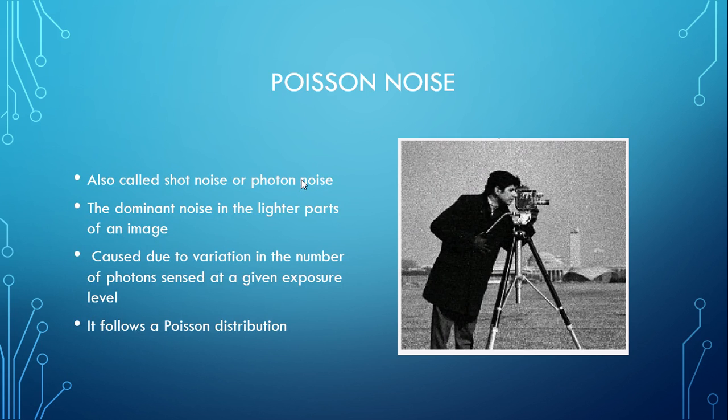Poisson noise is also called shot noise or photon noise. It is the dominant noise in the lighter parts of the image. It is caused due to variation in the number of photons sensed at a given exposure level. It follows a Poisson distribution.